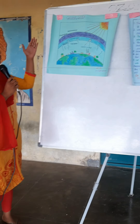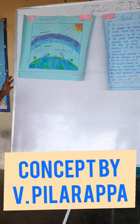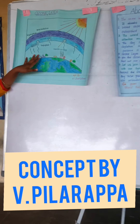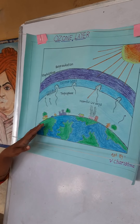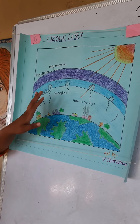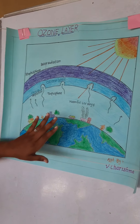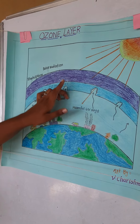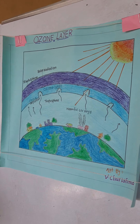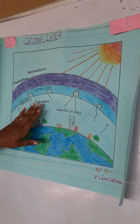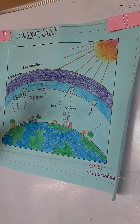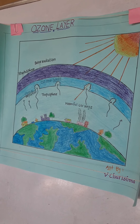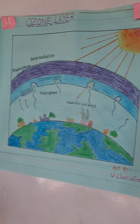Earth's atmosphere is divided into several layers. The lowest region is the troposphere, which extends 10 kilometers from the earth's surface. We are all living in the troposphere. The second layer is the stratosphere, which continues from 10 kilometers to 50 kilometers from the earth's surface. The third layer is the mesosphere, which continues up to 90 kilometers.